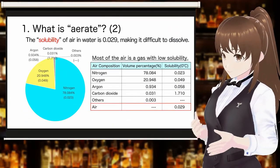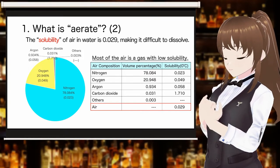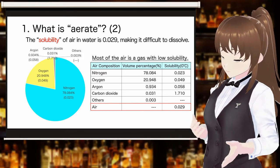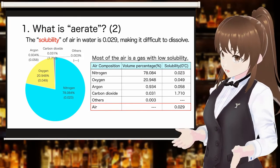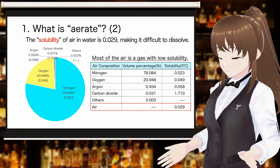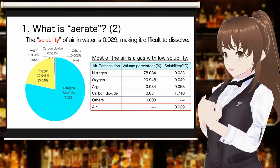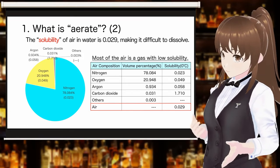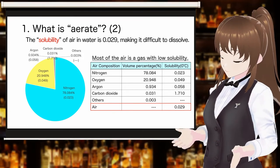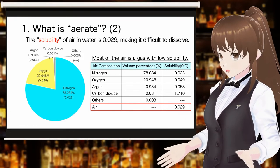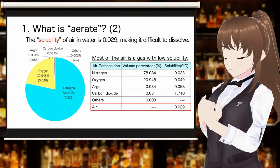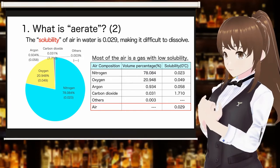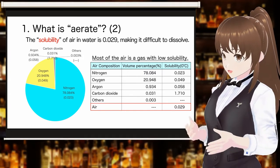Consider whether air can be dissolved into the cocktail ingredients. The solubility of air in water is expressed as solubility. The slide is a pie chart of air component ratios and the solubility of the major components of air. As you can see from the slide, most of the air is made up of components that are very sparingly soluble in water. Therefore, the solubility of air is as low as 0.029, making it very difficult to dissolve air in water.